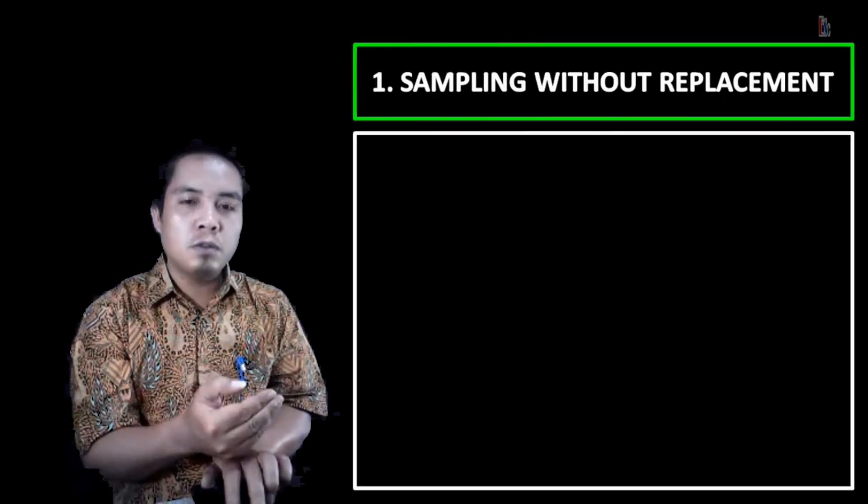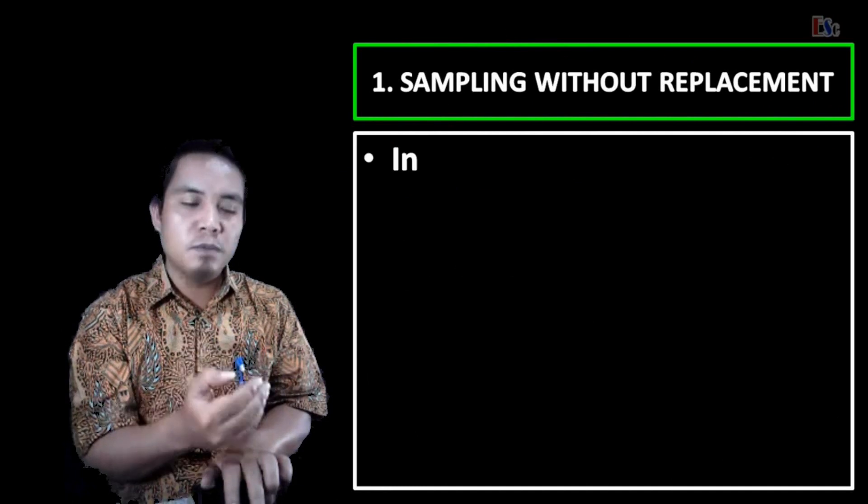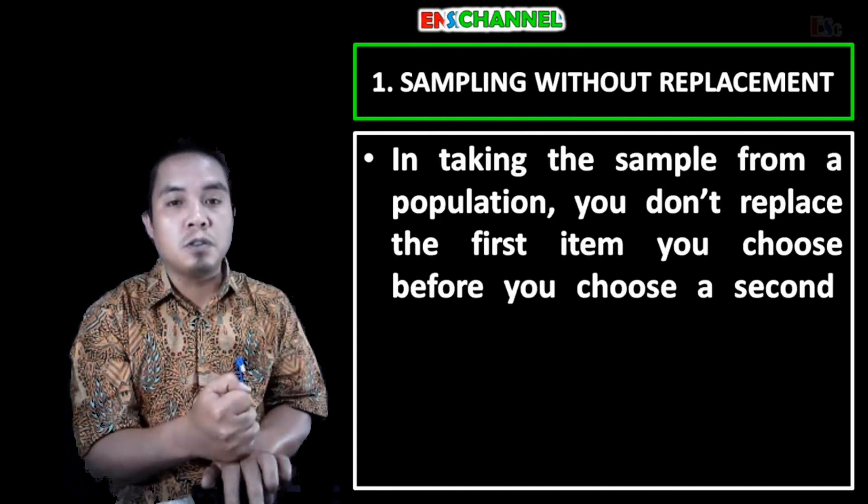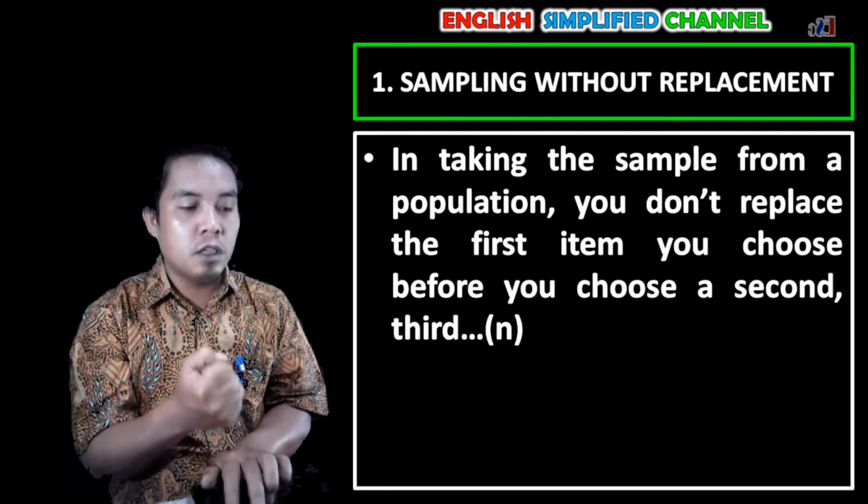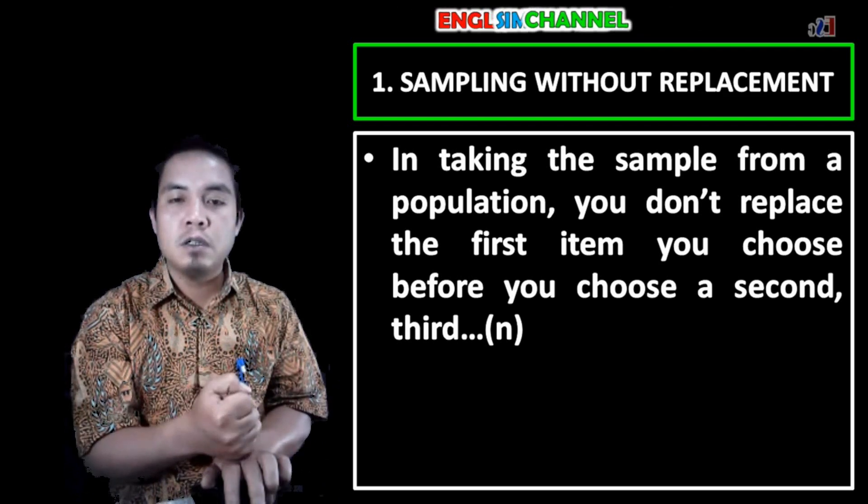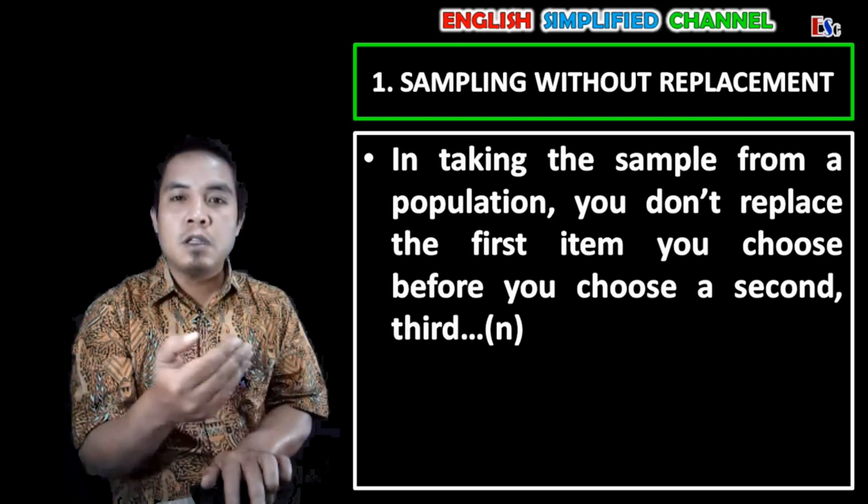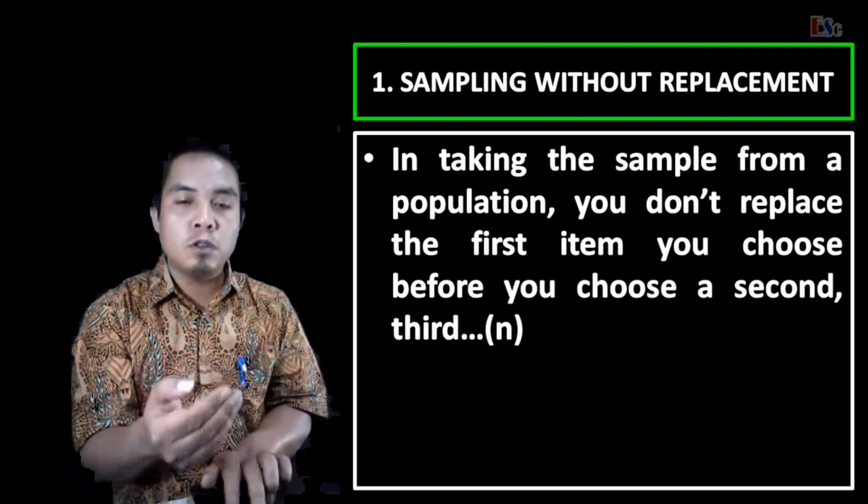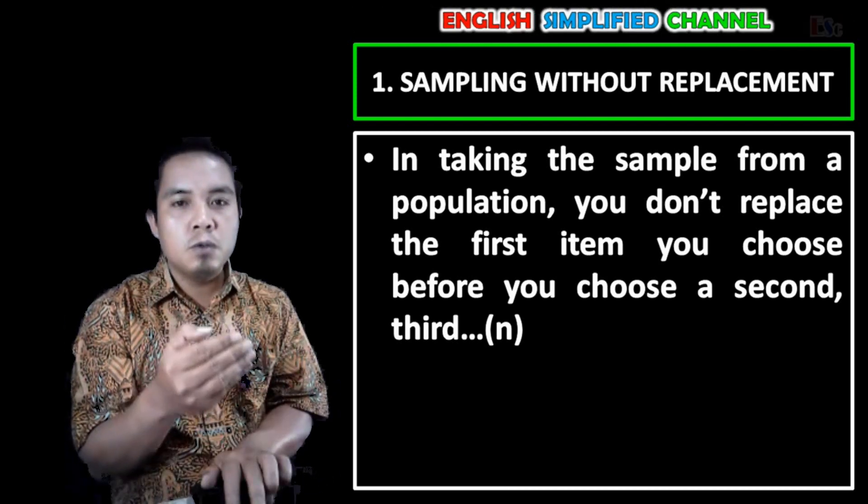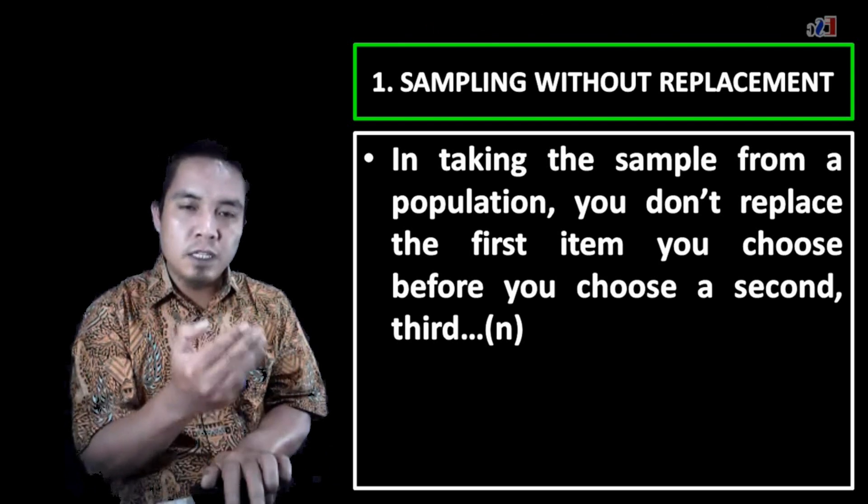Sampling without replacement means in taking the sample from a population, you don't replace the first item you choose before you choose a second, third, or until you get the number of the sample that you want from the population. And this will be questionable. Why? Let's see.